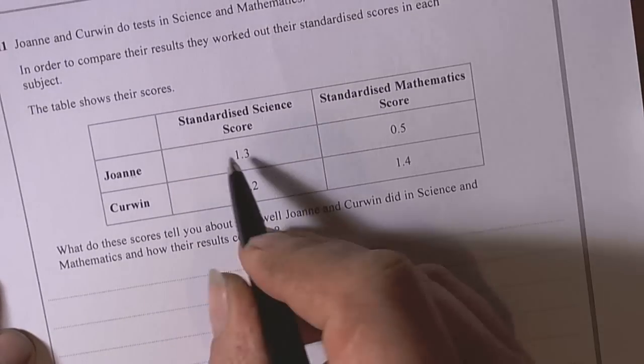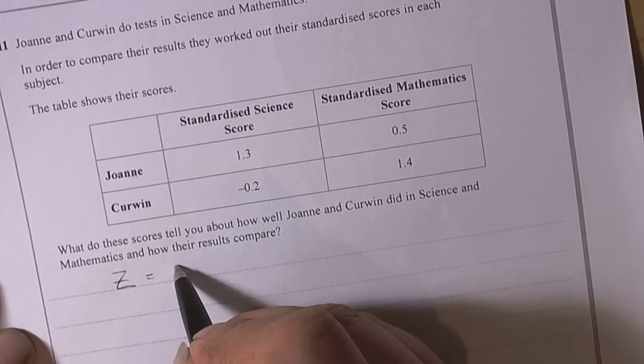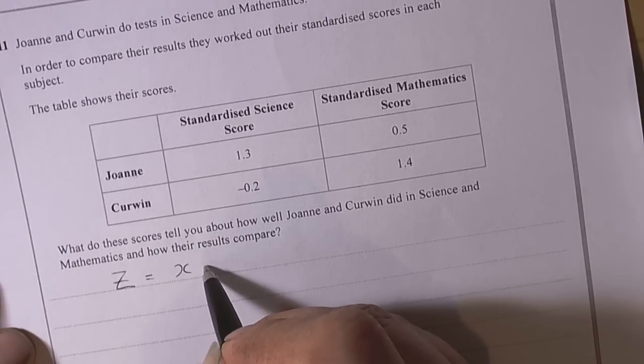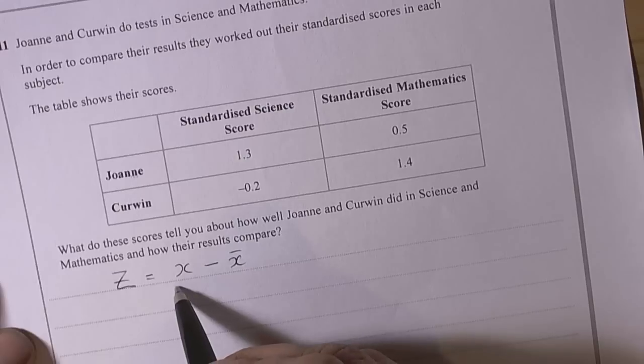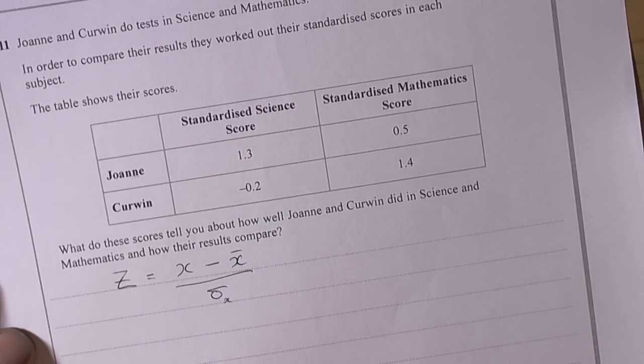Let's remind ourselves where the standardized score came from. So standardized scores is equal to the data variable take away the mean of that data variable divide by the standard deviation of the x values of the data variable.